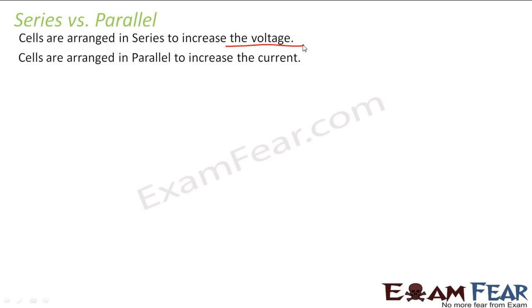Now you want to design a circuit, and for that particular circuit you will have some requirements. Let us say if you want a circuit which has a voltage source of EMF say 50 volts, but you do not have a battery of 50 volts. In that case, you can combine the batteries you have to make it 50 volts. So when you arrange cells in series, you increase the voltage because the voltage of each cell gets added up.